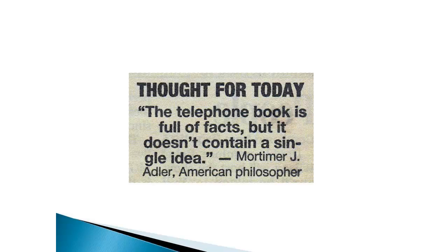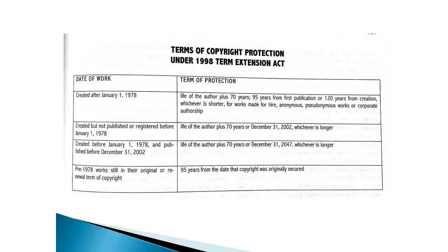Regarding how long copyright protects works: for anything created now, it's protected for the life of the author plus 70 years, or 95 years from first publication, or 120 years from creation — whichever is shorter. That's quite a long time.